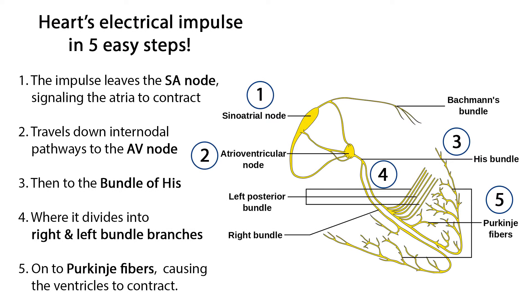Let's review the heart's electrical impulse in five easy steps. First, the impulse leaves the SA node, signaling the atria to contract. Then it travels down the internodal pathways to the AV node, then to the bundle of Hiss, where it divides into the right and left bundle branches, and on to the Purkinje fibers causing the ventricles to contract.